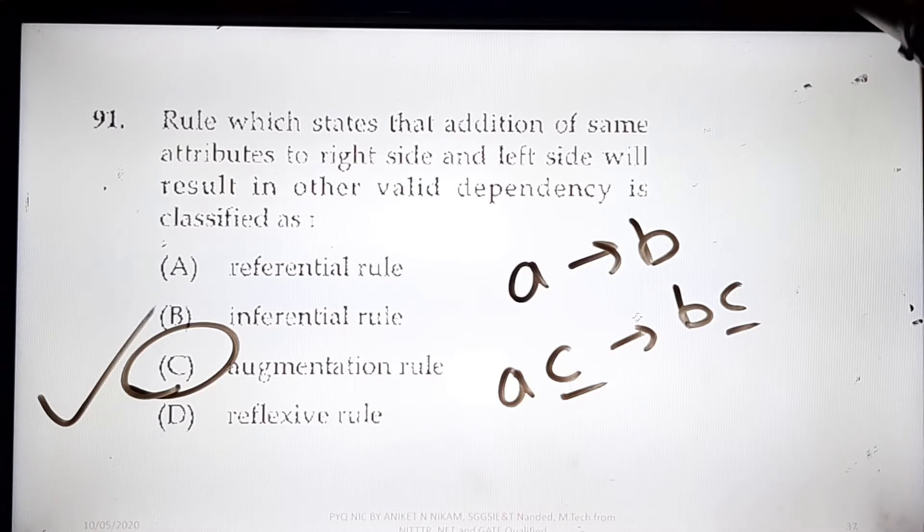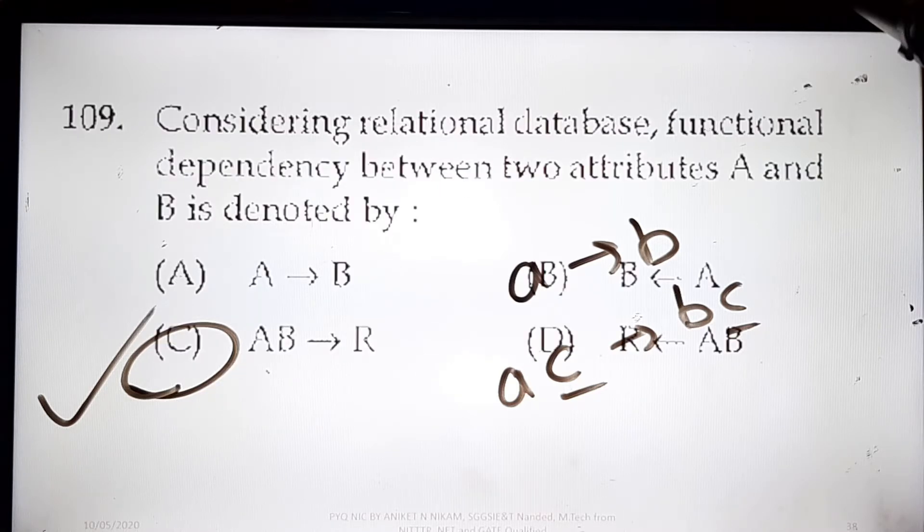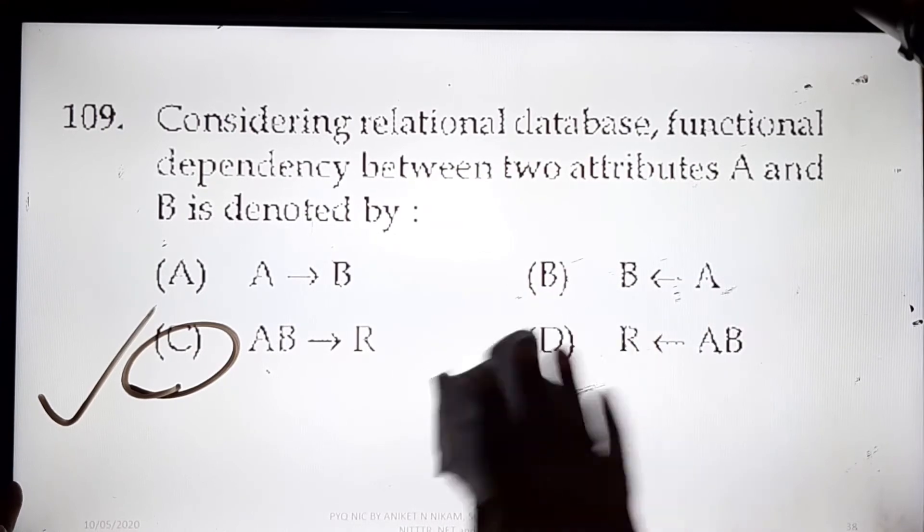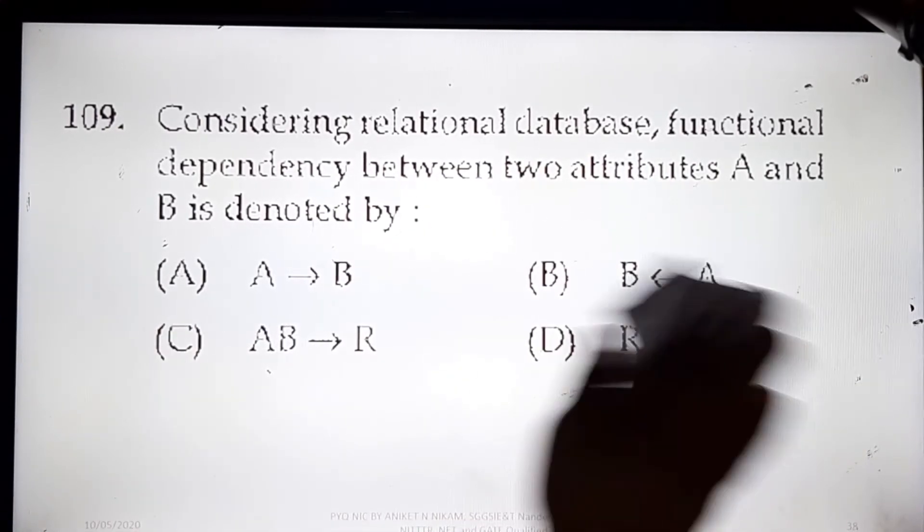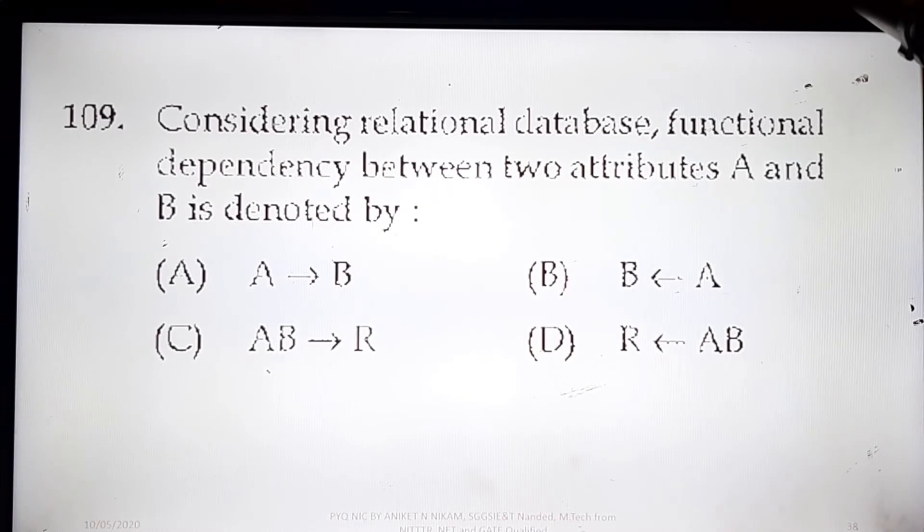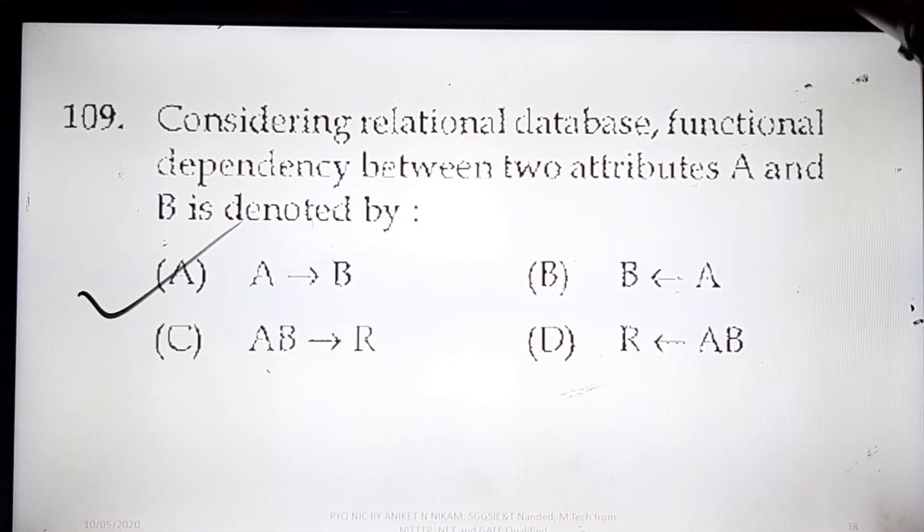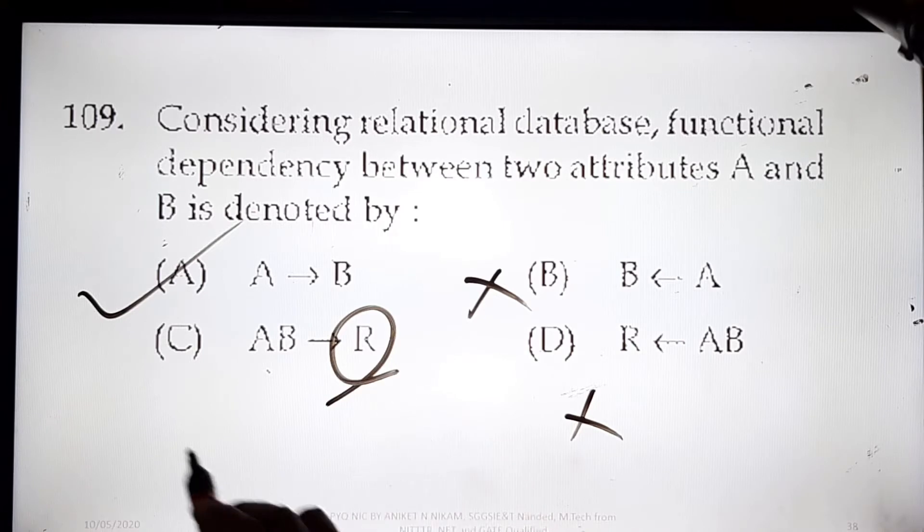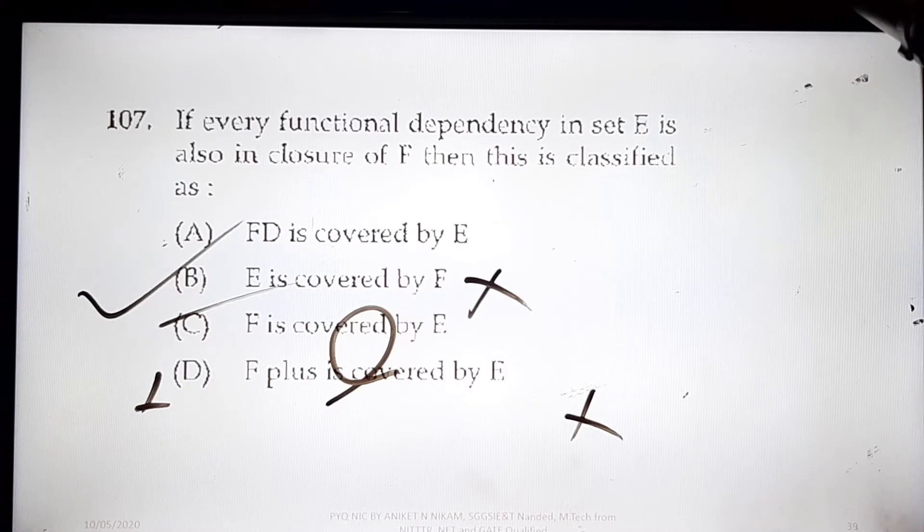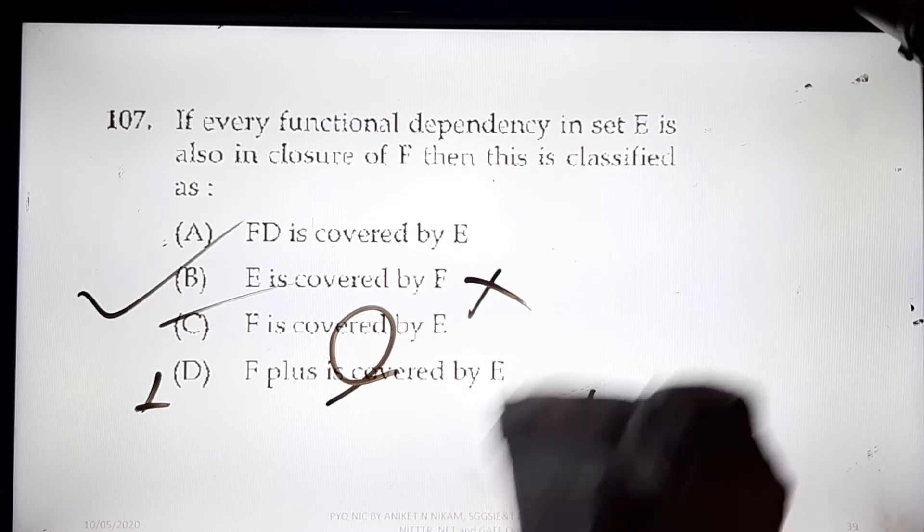Now this question: consider a relational database, functional dependency between two attributes A and B is denoted by. I have told in my first video that A determines B. So this is a wrong notation, this is also wrong notation, and AB determines R where R is having relation - this is also wrong. So the option is A determines B.